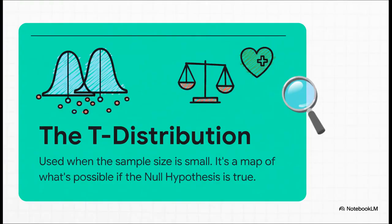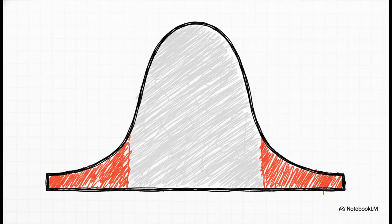Now, because a lot of clinical studies have to work with smaller groups of people, we often use something called the t-distribution. The absolute best way to picture this is to think of it as a map. It's a map that shows us every possible t-value we could ever expect to see if the new drug actually did nothing at all. And if you look at this map, you'll see a big hill right in the middle. That's where all the boring, common, just random chance results would land. But way out on the far edges, you see these small areas called the tails. Those are the rare zones. The whoa, that's surprising regions.